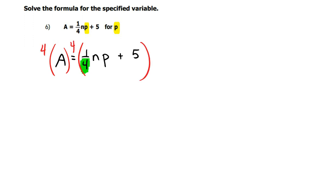Now on the left side, four times A is just 4A. On the right side, you're going to have to distribute the four to the one-fourth NP, and also distribute the four to the five.